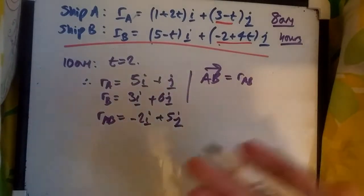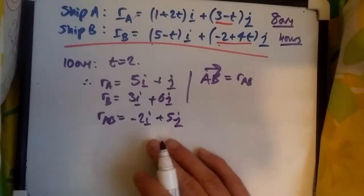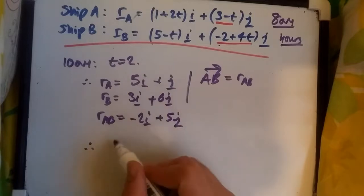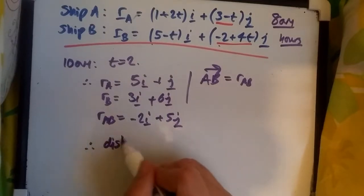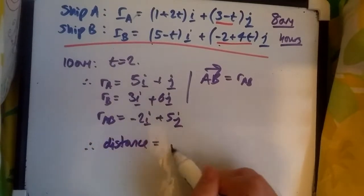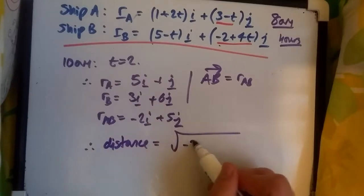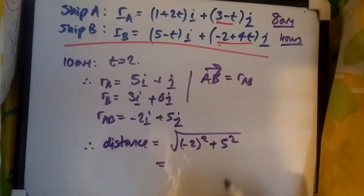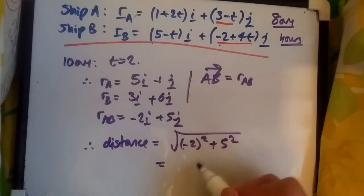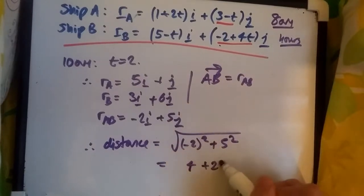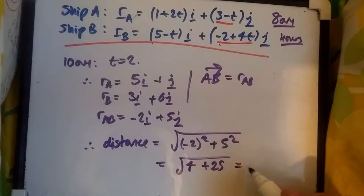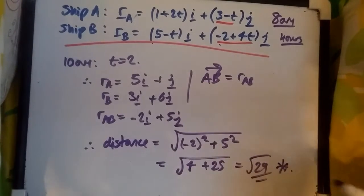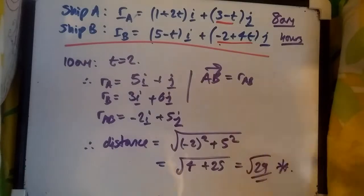And now we just use the Pythagorean theorem. We just want to find the magnitude of this value. Therefore, finding the magnitude, the distance is literally the square root of minus 2 squared plus 5 squared. Dead easy from here. Minus 2 squared is 4, 5 squared is 25, all rooted, this is square root of 29.